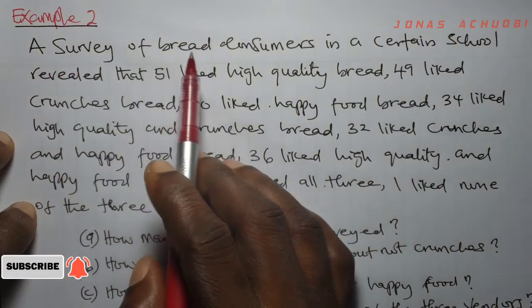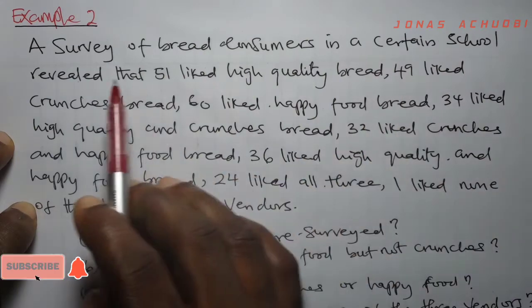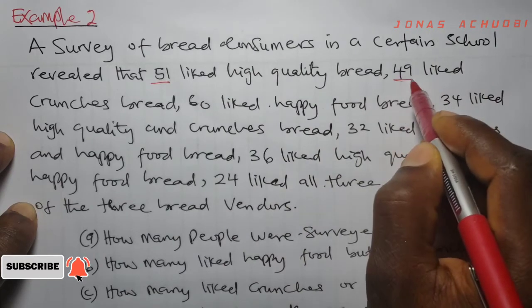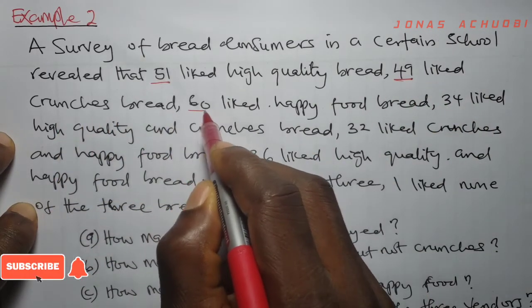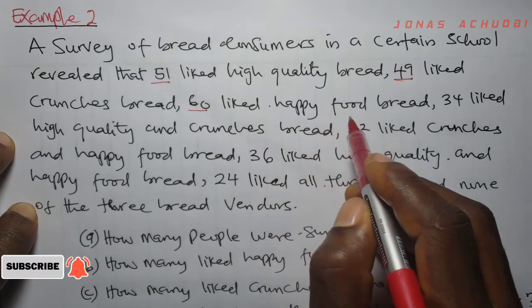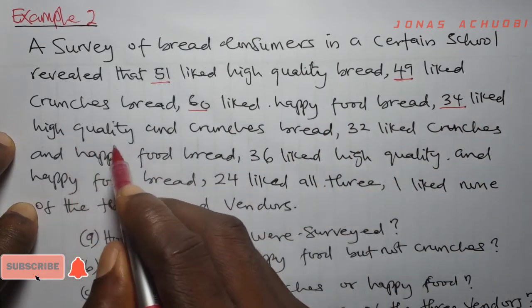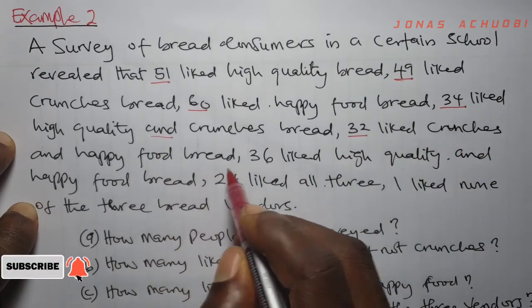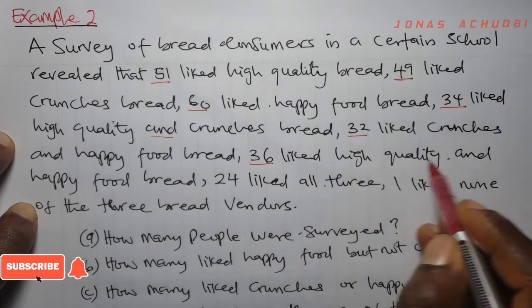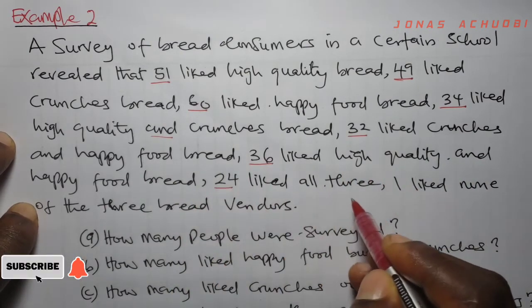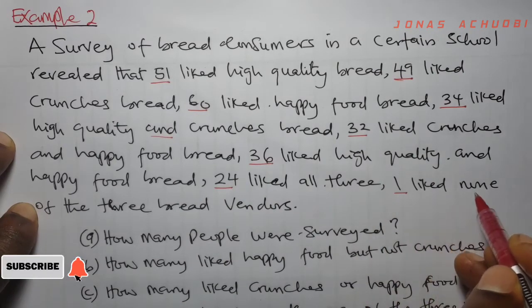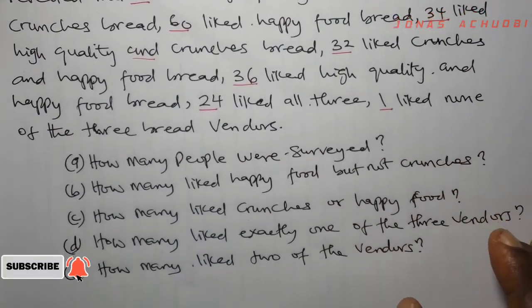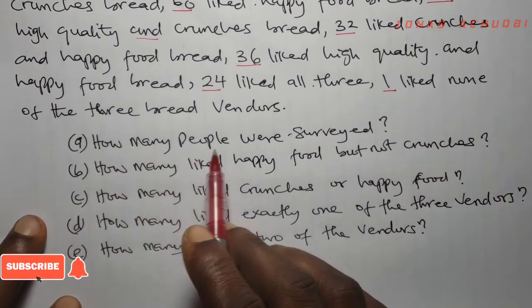A survey of bread consumers in a certain school revealed that 51 liked high quality bread, 49 liked crunches bread, 60 liked happy food bread, 34 liked high quality and crunches, 32 liked crunches and happy food bread, 36 liked high quality and happy food bread, 24 liked all three, and 1 liked none of the three bread vendors. We have to answer the following questions. A: how many people were surveyed?